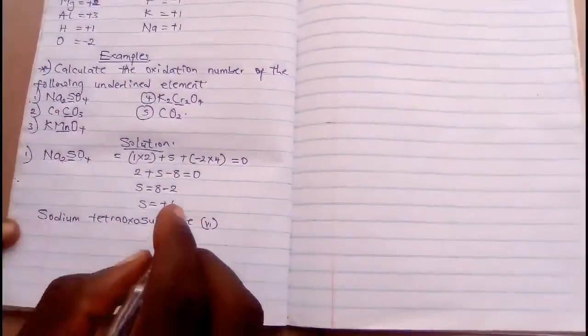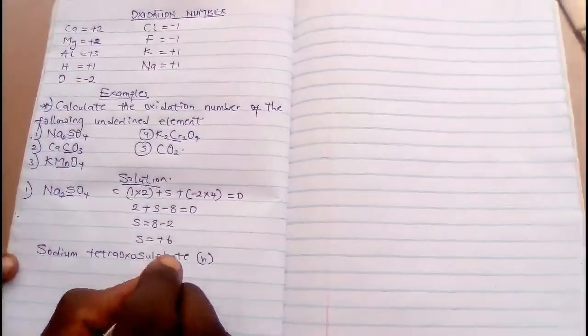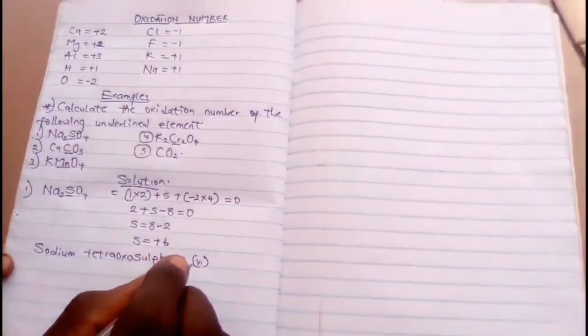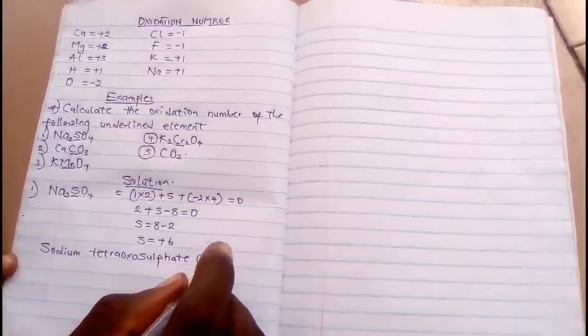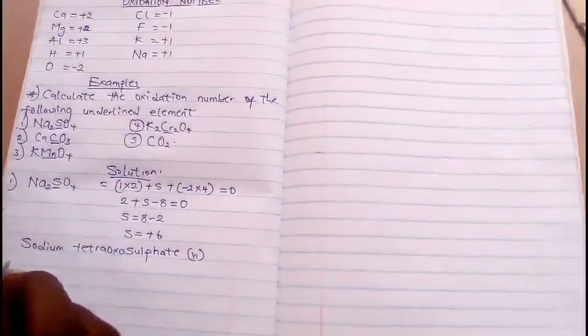So when you see some IUPAC name Na₂SO₄ as sodium tetra-oxo-sulfate VI, it's very easy. We can easily get it from the oxidation number. So the oxidation number you are seeing is very important because if you can learn the oxidation number very well, you'll be able to get the IUPAC nomenclature of many compounds.